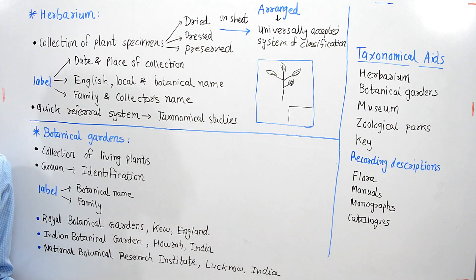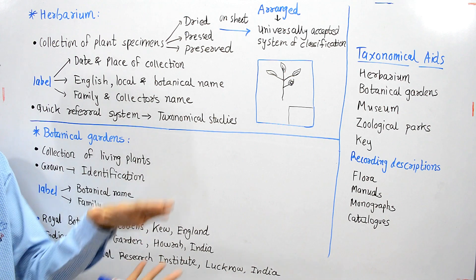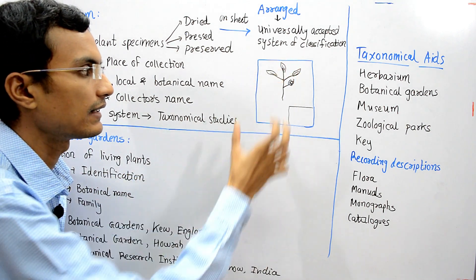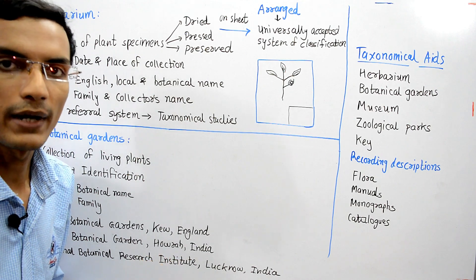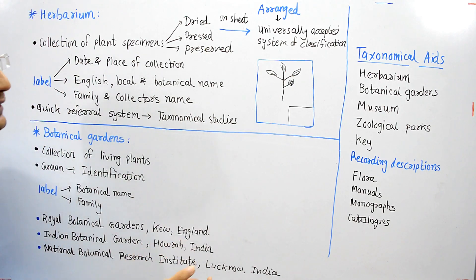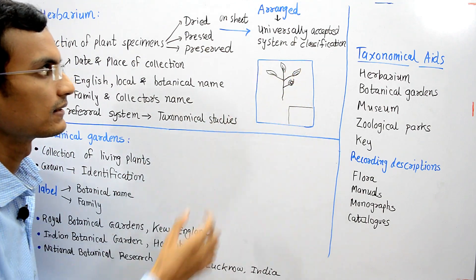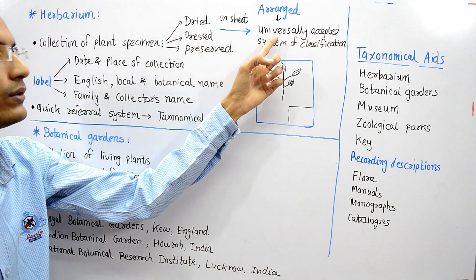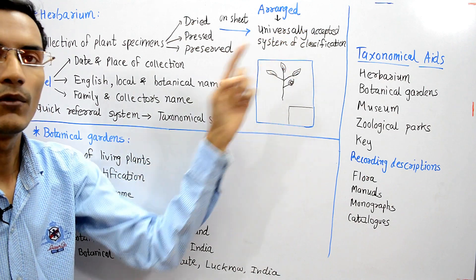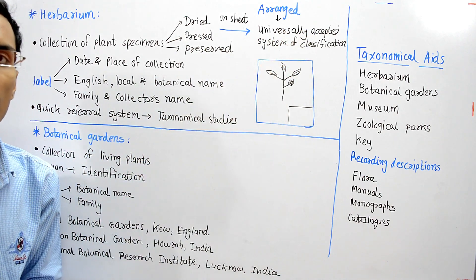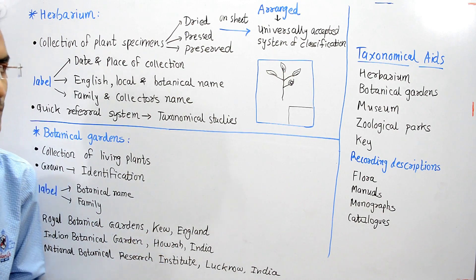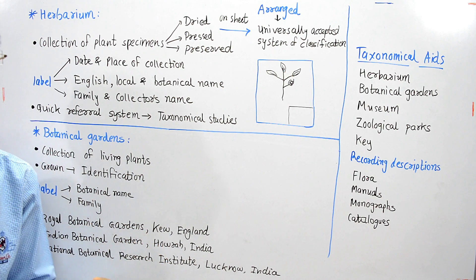First, the part of the plant is dried, then it is pressed because we have to preserve it on a sheet, and then it is preserved properly on a sheet. These sheets are arranged according to a universally accepted system of classification — for example, they are arranged according to family or genus — so that one can find it easily.